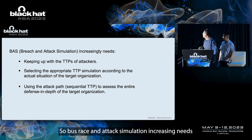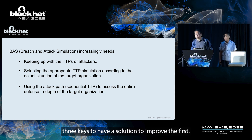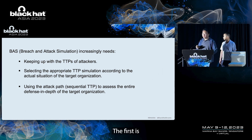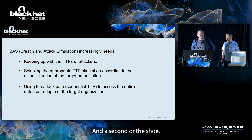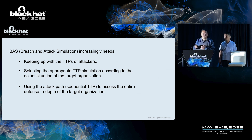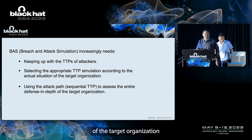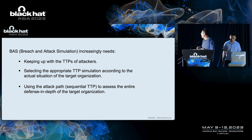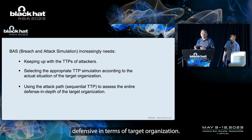BAS — Breach and Attack Simulation — has increasing needs. There are three key areas to help BAS solutions improve. First, being able to always keep up with attackers' TTPs. Second, focusing on selecting the appropriate TTP simulations according to the actual situation of the target organization. Third, being able to use more adaptive attack paths to assess the defensive in-depth posture of the target organization.